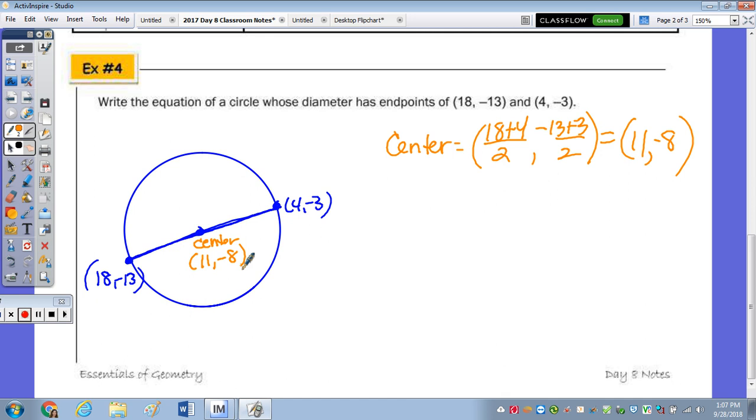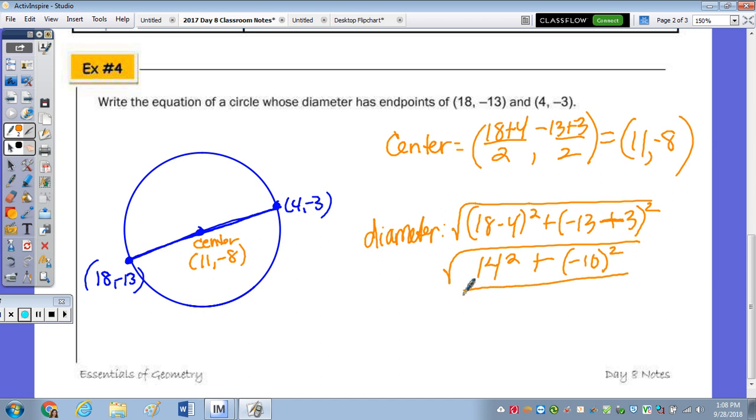Now we're going to calculate the diameter first, and then cut it in half. Because even though we can calculate the radius right now, using these two points, or these two points, if you had made a mistake in the center, you're then going to make a mistake for the radius. So let's actually calculate the length of the diameter. So x2 minus, I'm going to subtract this way, 18 minus 4 squared plus negative 13 minus the negative 3 squared. Check the substitution, 18 minus 4, negative 13 minus the negative 3. So we end up with 14 squared plus, now this turns into what? Negative 10 squared. And what is that radical?